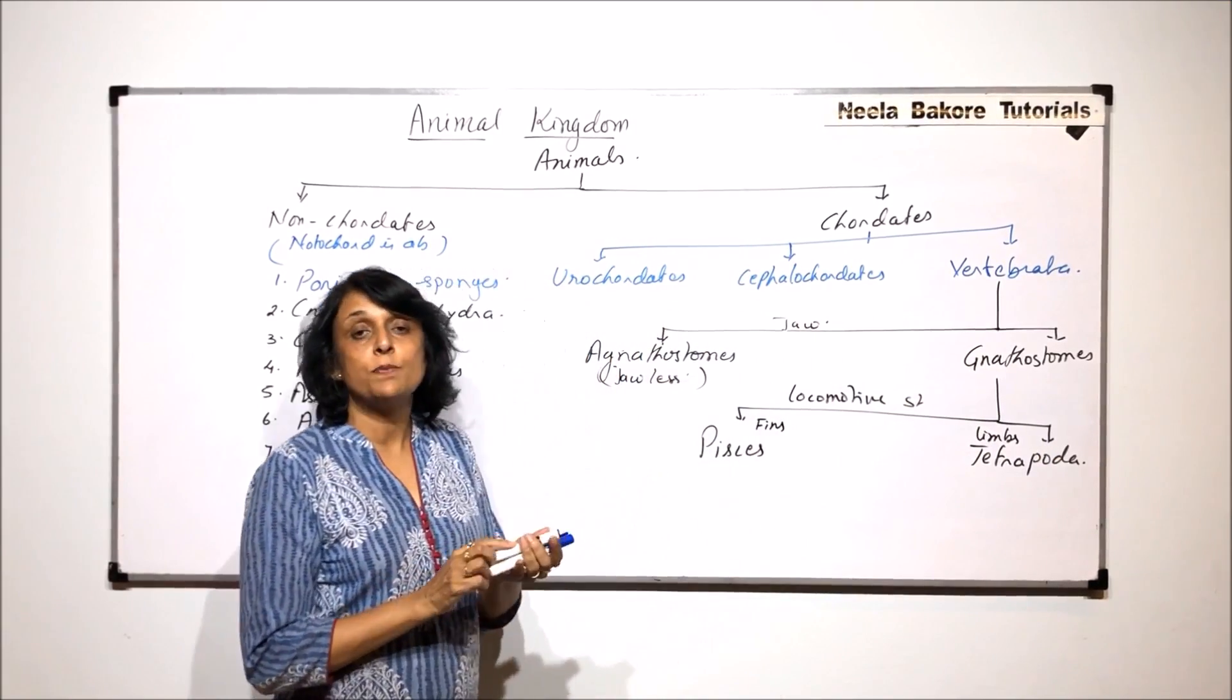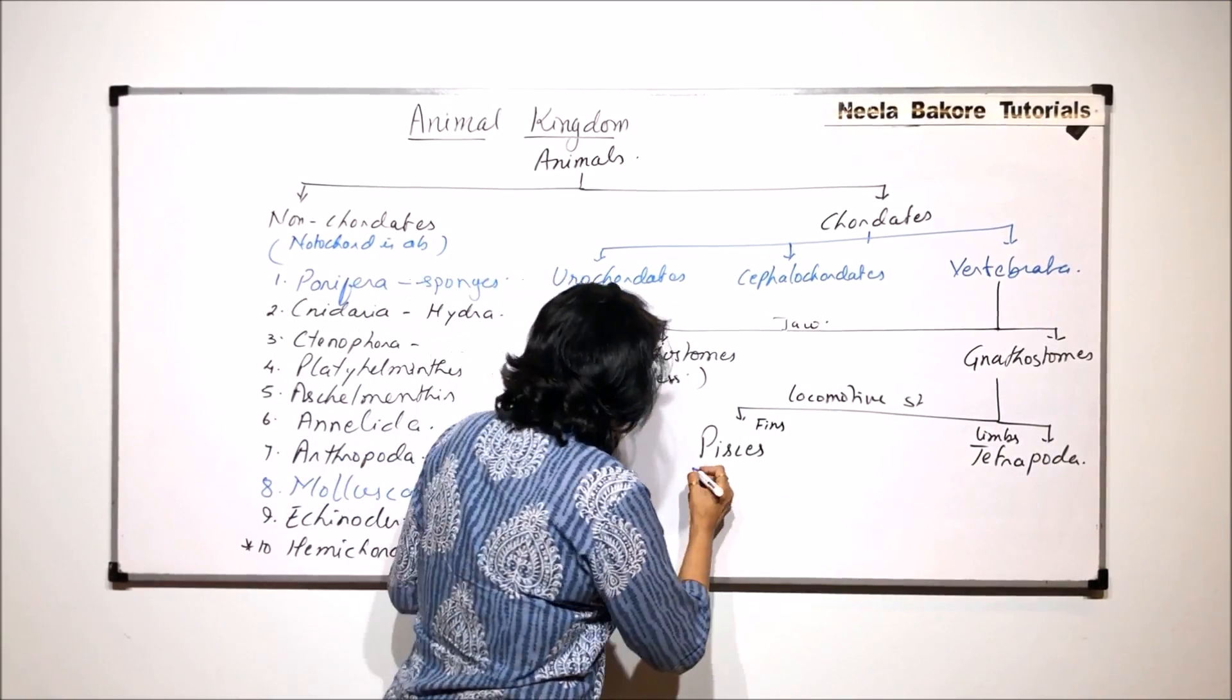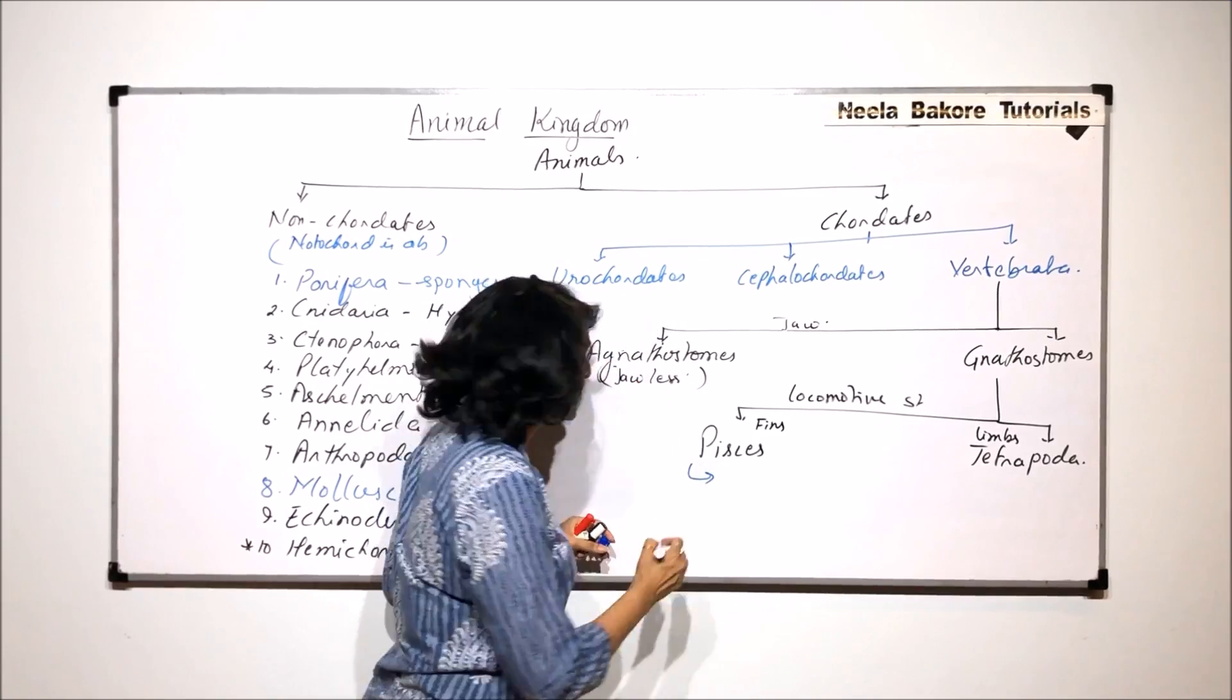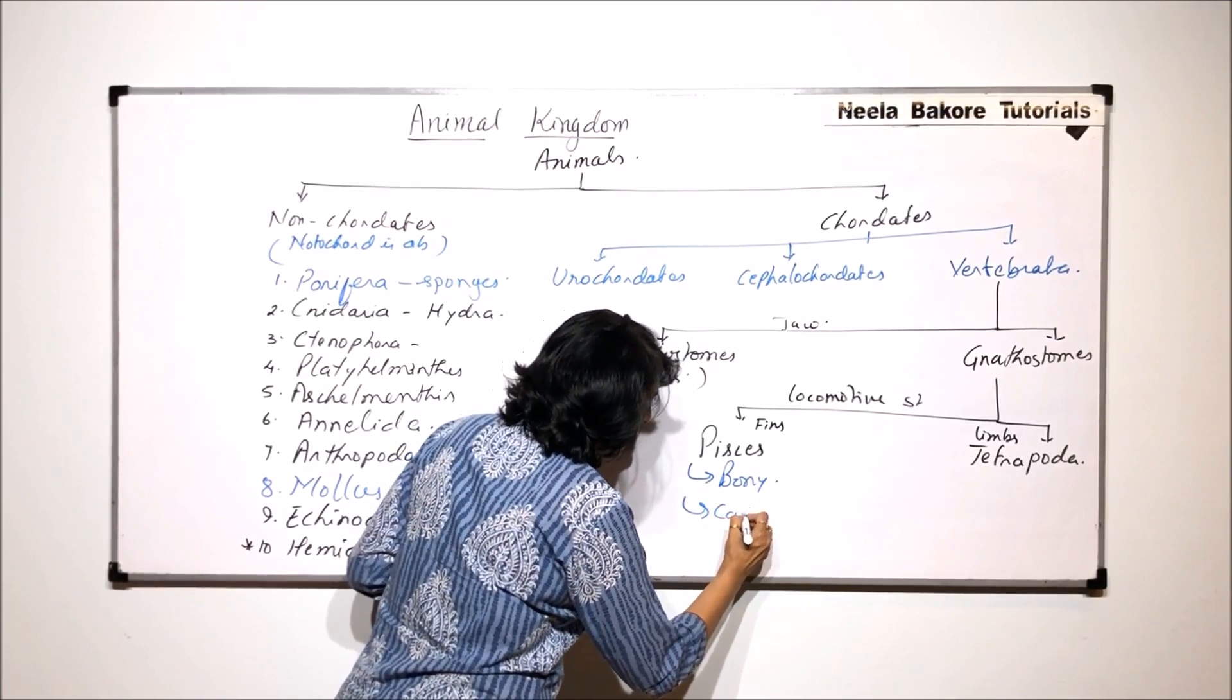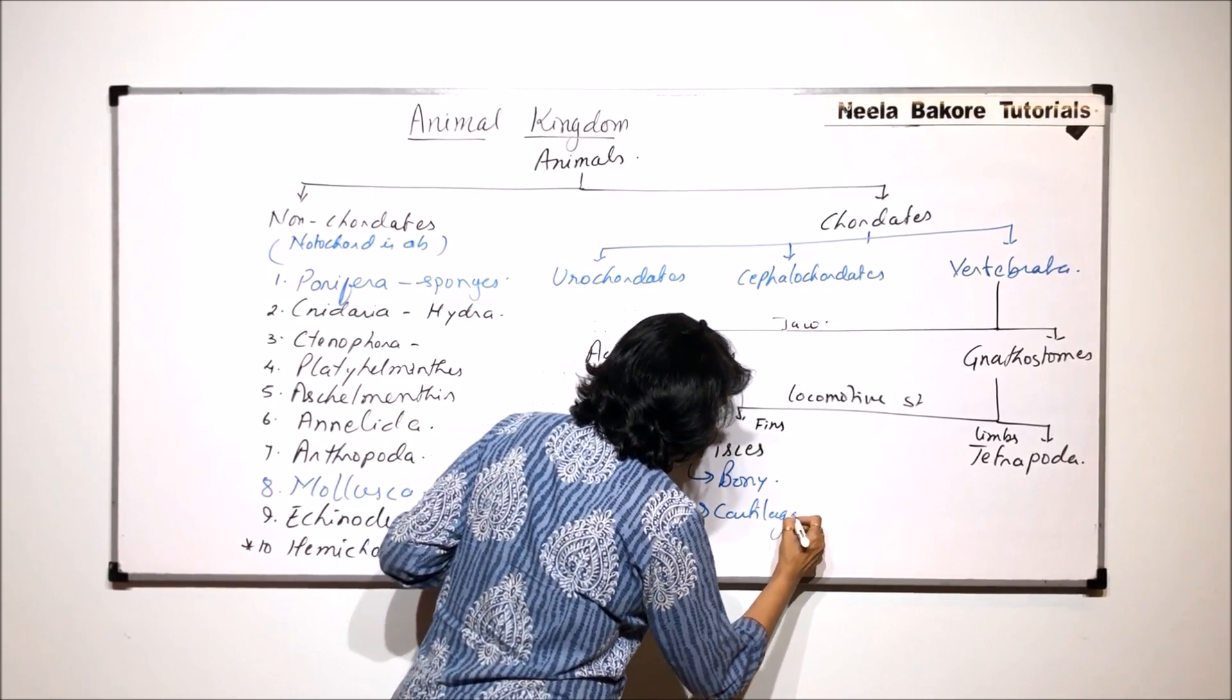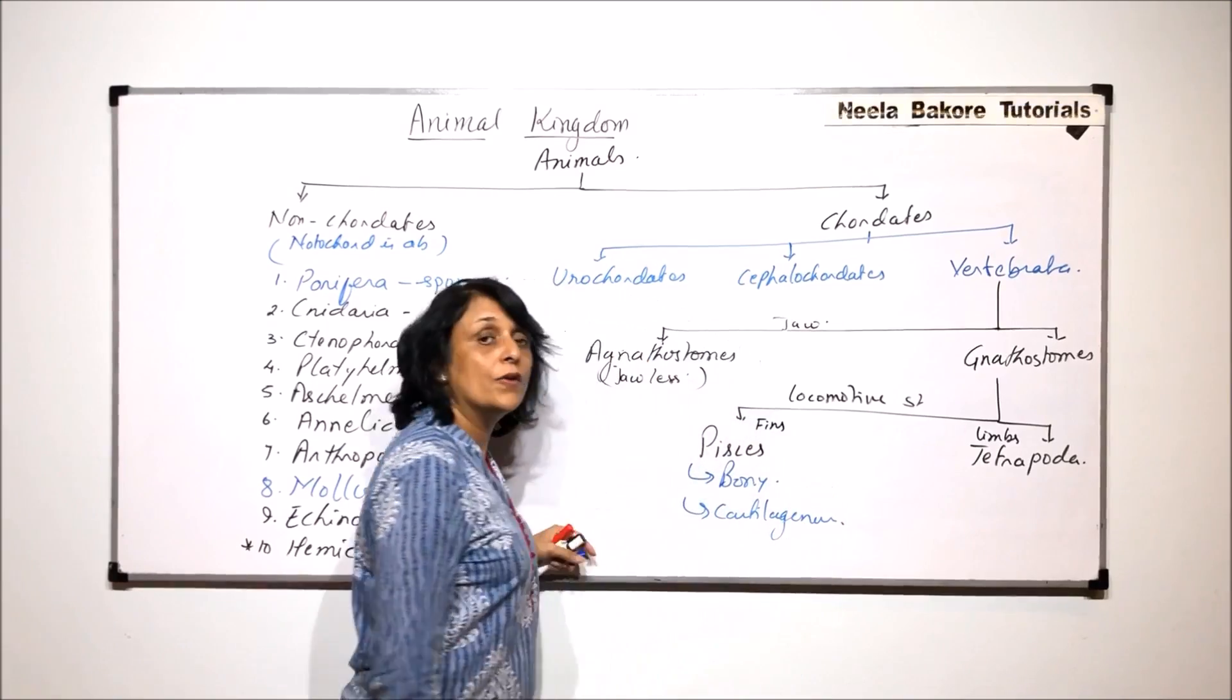The fishes, that is pisces, they are further divided into two categories. That is bony fishes or osteichthyes, and cartilaginous fishes, that is chondrichthyes.